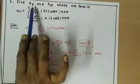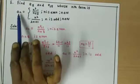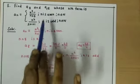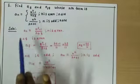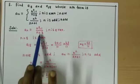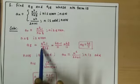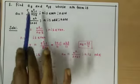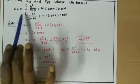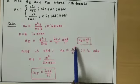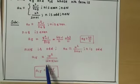In this sum, find a8 and a15 whose nth term is an = n² - 1 for even n. So a8 = 8² - 1 = 63. That gives 63 by 11 for a8. For n = 15 (odd), an = n²/(2n+1), so a15 = 15² divided by 2 into 15 plus 1, which is 225.